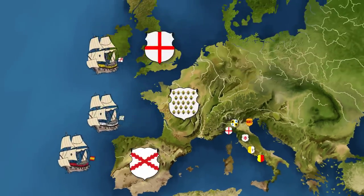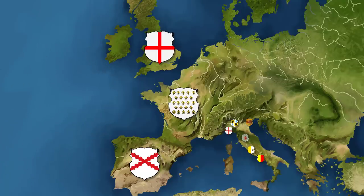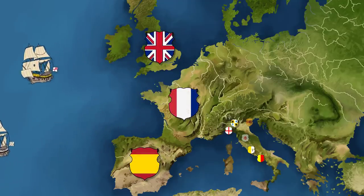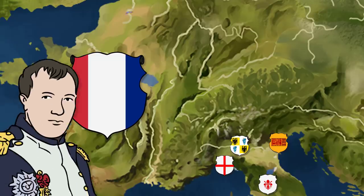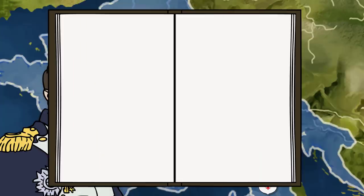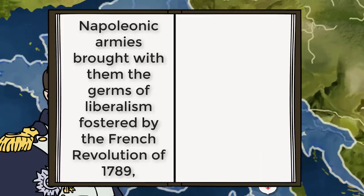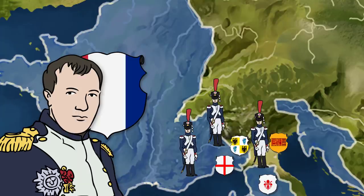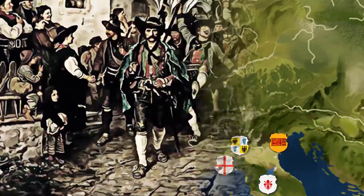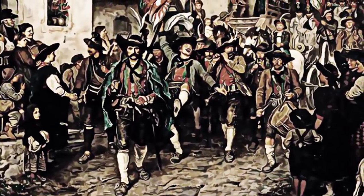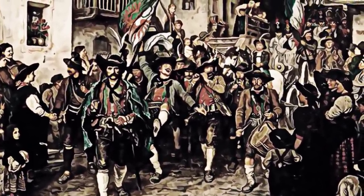As the glory and splendor of Florence and Venice faded, the cities of the Atlantic seaboard surpassed them in wealth and status. What followed from the 1700s to the early 1800s is referred to by some historians as the forgotten centuries, but Napoleon's invasion of Italy abruptly shattered this period of relative calm. In the words of Kohlhofer, Napoleonic armies brought with them the germs of liberalism, fostered by the French Revolution of 1789, and introduced a minor industrial revolution. When Napoleon's empire collapsed, the masses celebrated his defeat, having been agitated by conscription and heavy taxes, hoping for a return to the status quo.